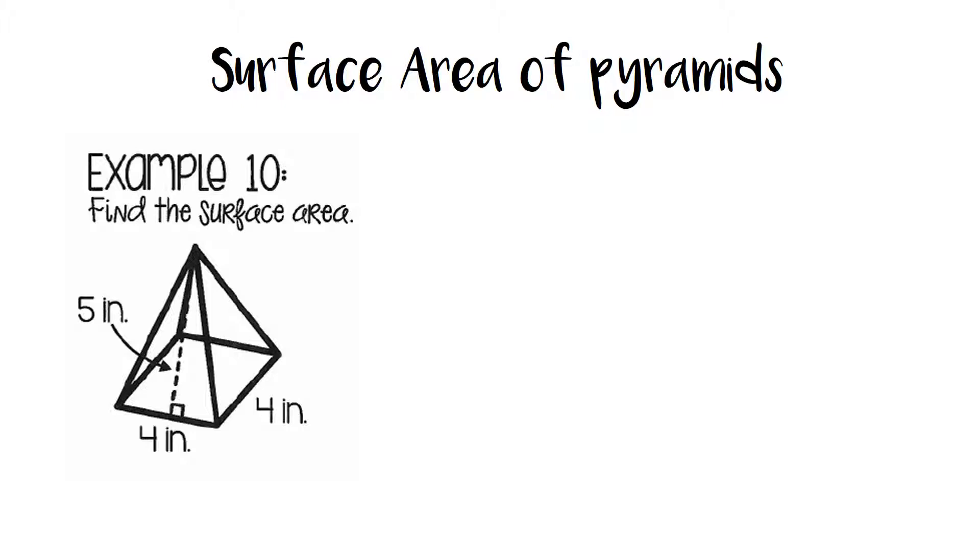So we have a couple examples to go through with that. So in our example, we have a square pyramid, or a pyramid with a base that is a square. So our formula, remember, is big B plus big P times L. So the area of the base is a square, so it's just going to be 4 times 4.